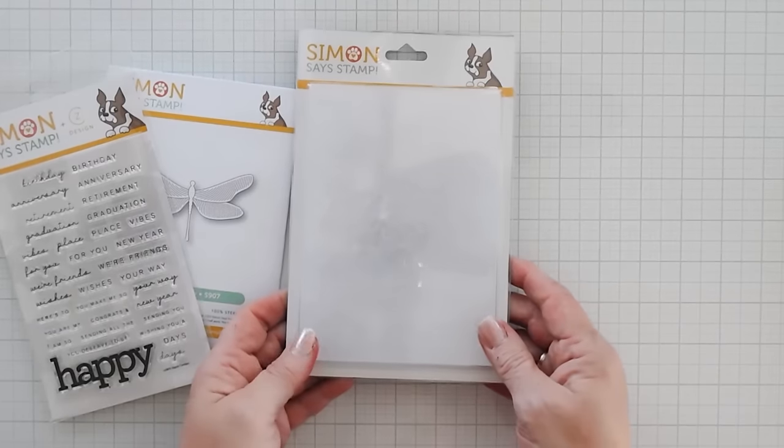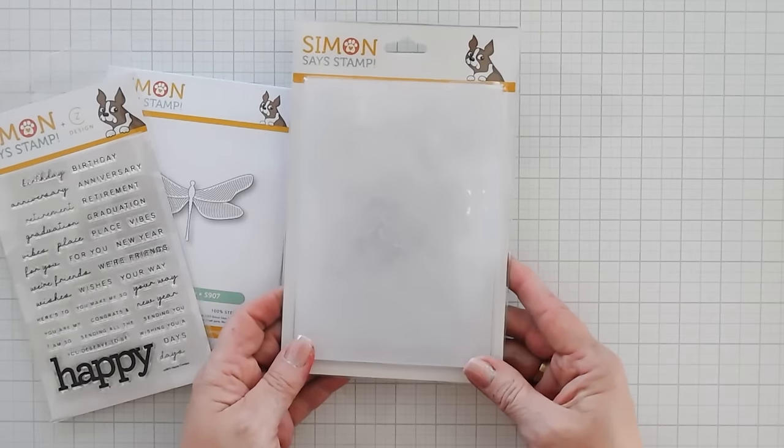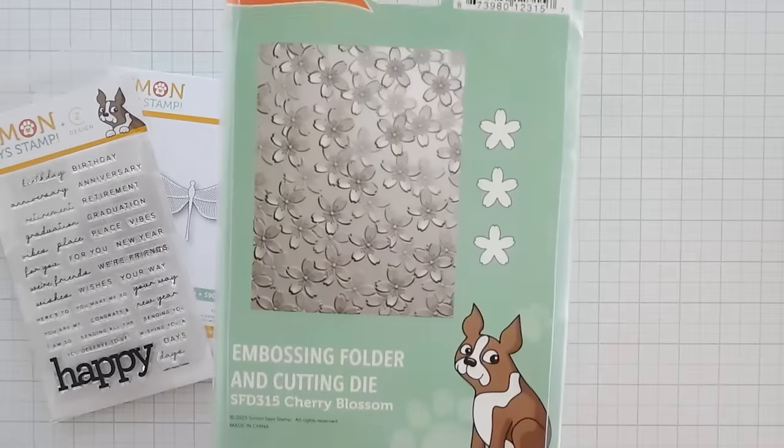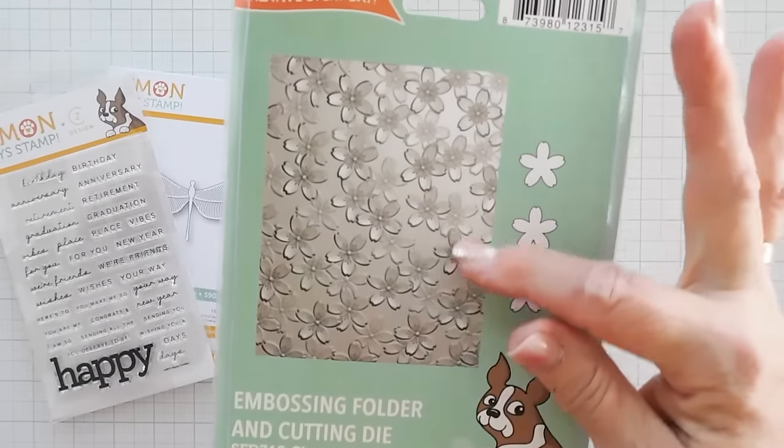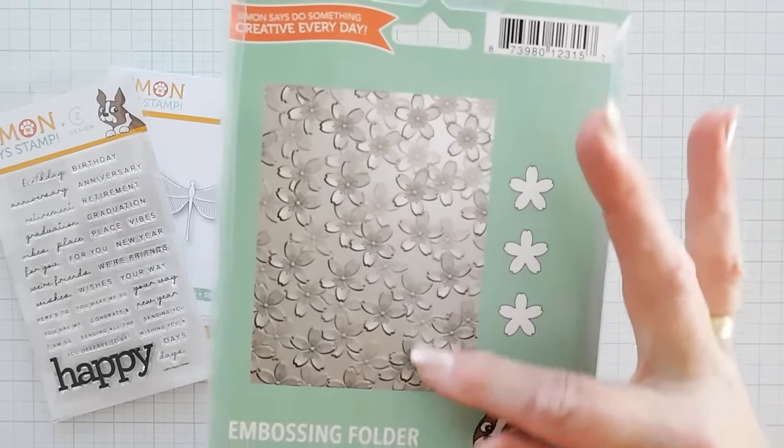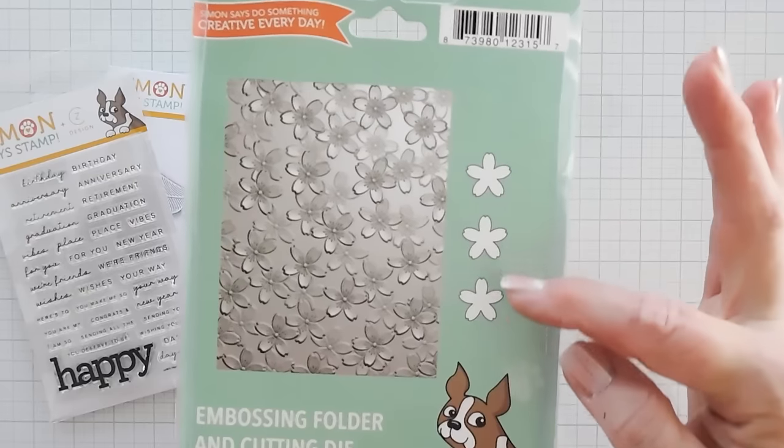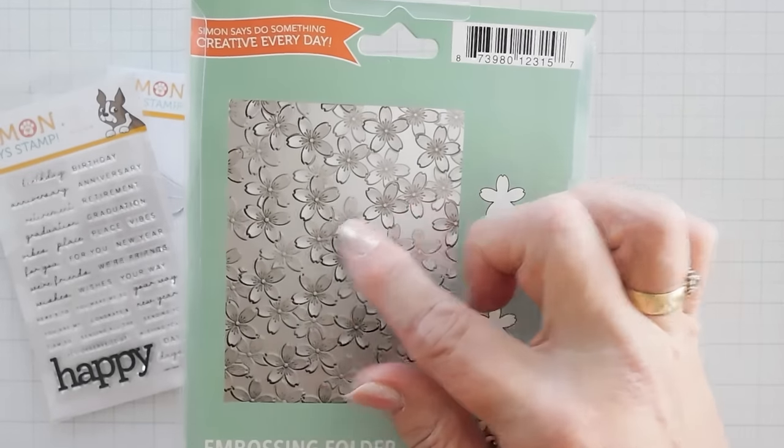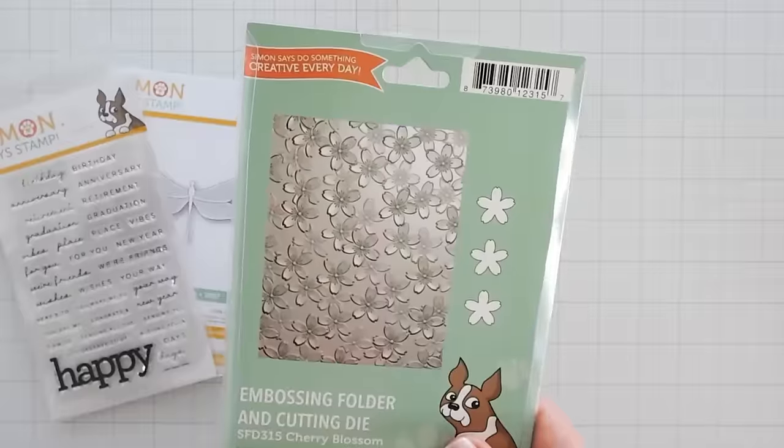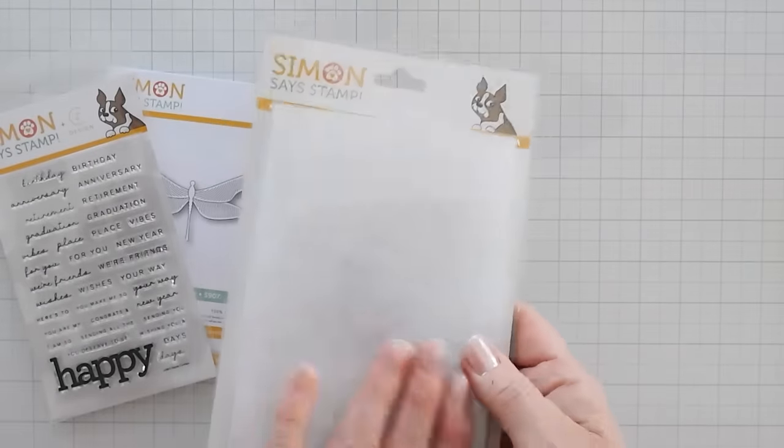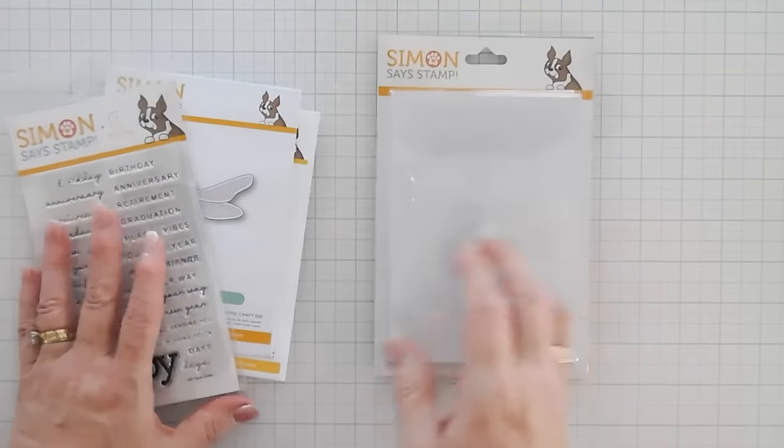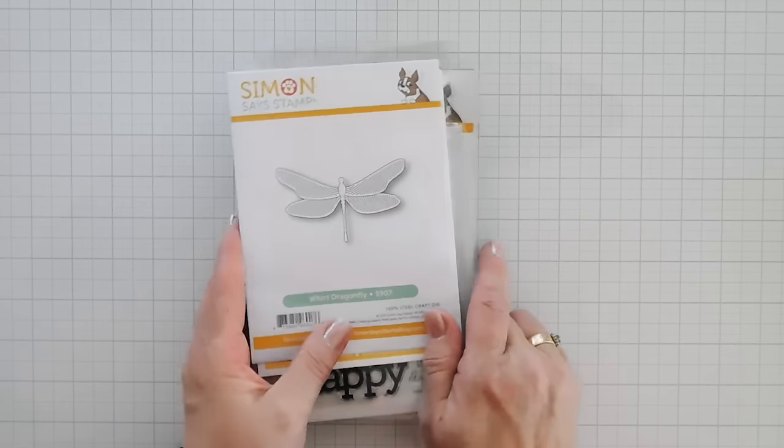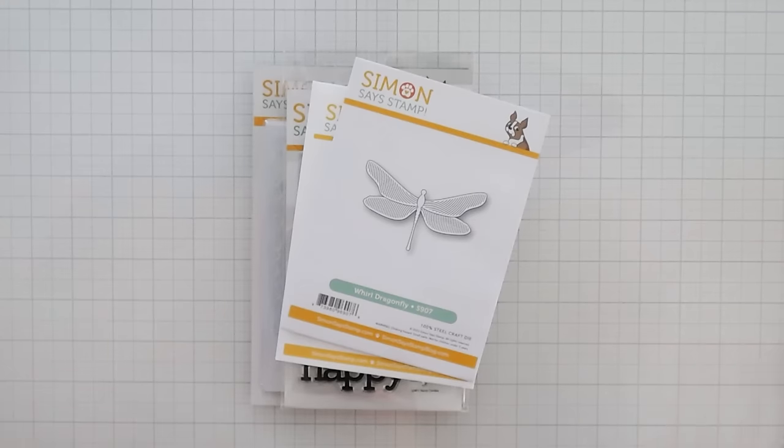Along with this fabulous embossing folder. I love backgrounds, embossed backgrounds. And this was super fun because you have, it's called Cherry Blossom. And you have all these beautiful cherry blossoms, but you also get three flower dies that will cut out these little blossoms. So this is the embossing folder we're going to be using today. I love cherry blossoms. It's that time of year. Okay, let's do some die cutting, and then we'll put everything together.